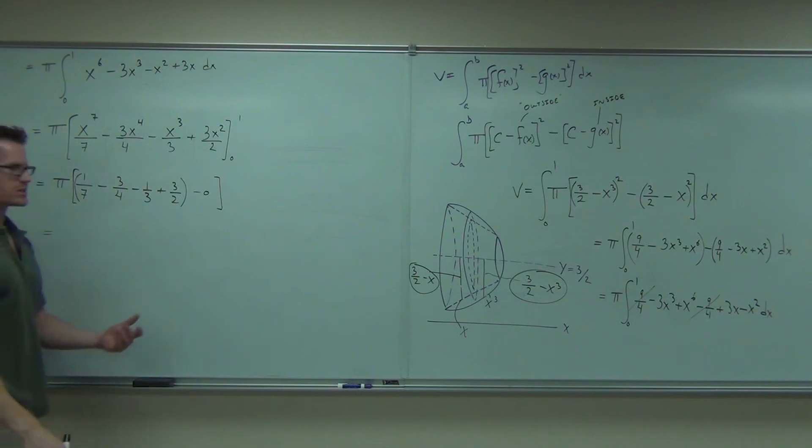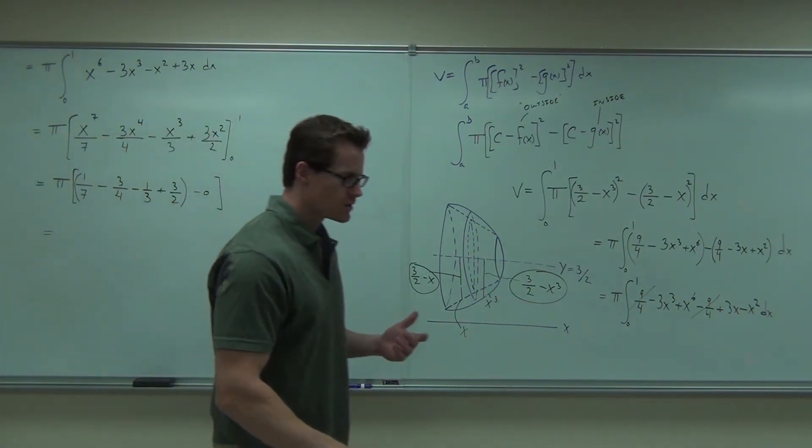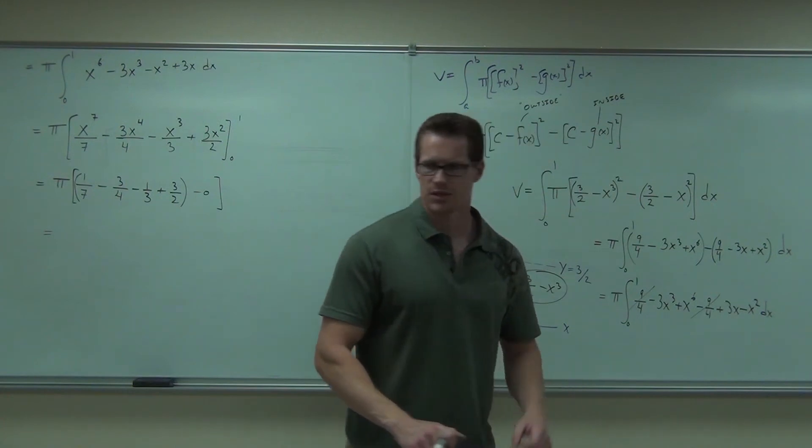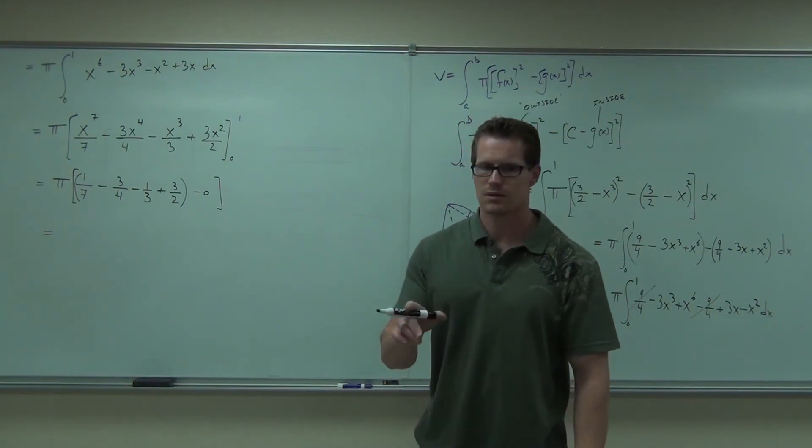So combine all those. Has anyone done 1/7th minus 3/4ths? Yeah, 89 or 84. How much? 89 or 84. I'll get something different. 1/7th minus 3/4ths minus 1/3rd. And then what do I put in here? Make sure I put in here plus 3 over 2.